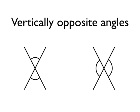If you look at the diagram on the left here, you can see that I've drawn two angles which are opposite each other. They are the opposite sides of where the two lines cross. And so we call this pair of angles vertically opposite angles.